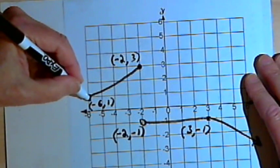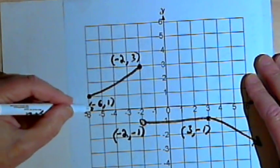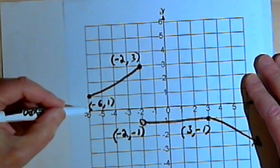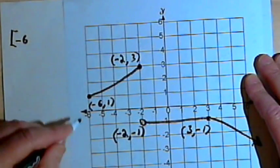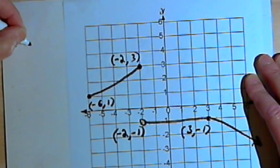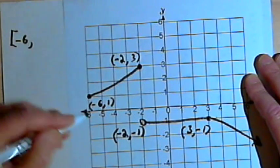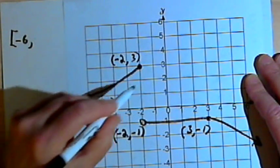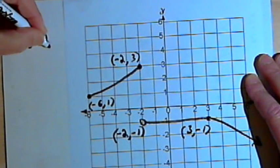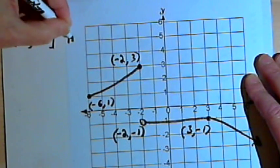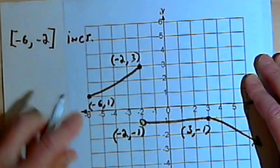We started out at negative 6 comma 1. So I'm only going to concern myself with the x values. So when I go from negative 6, and that's including negative 6, so my interval notation is going to start with the square bracket. When I go from negative 6 over to negative 2, including negative 2, I've got an increasing interval.